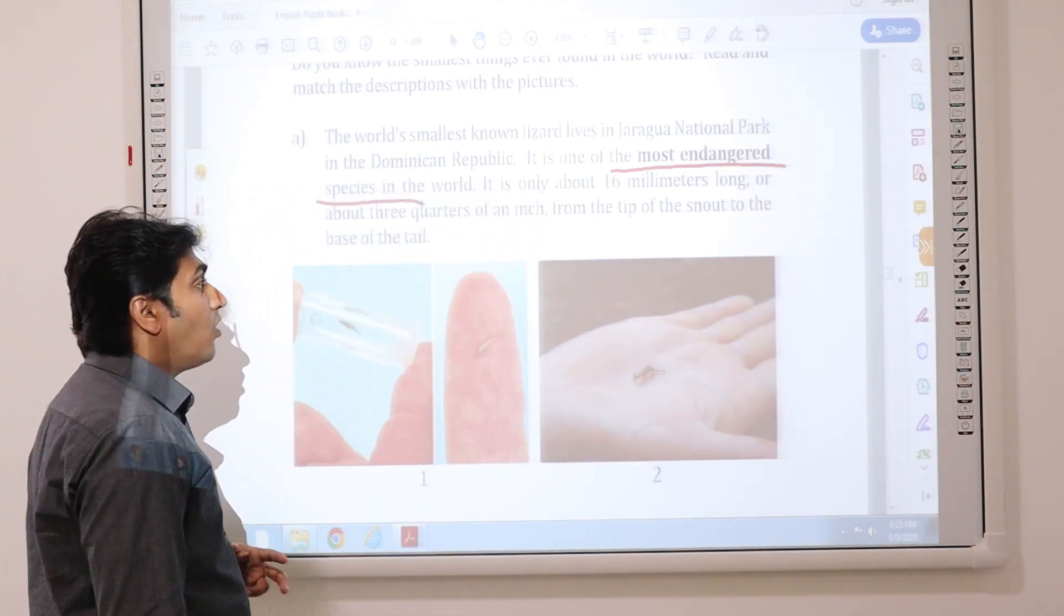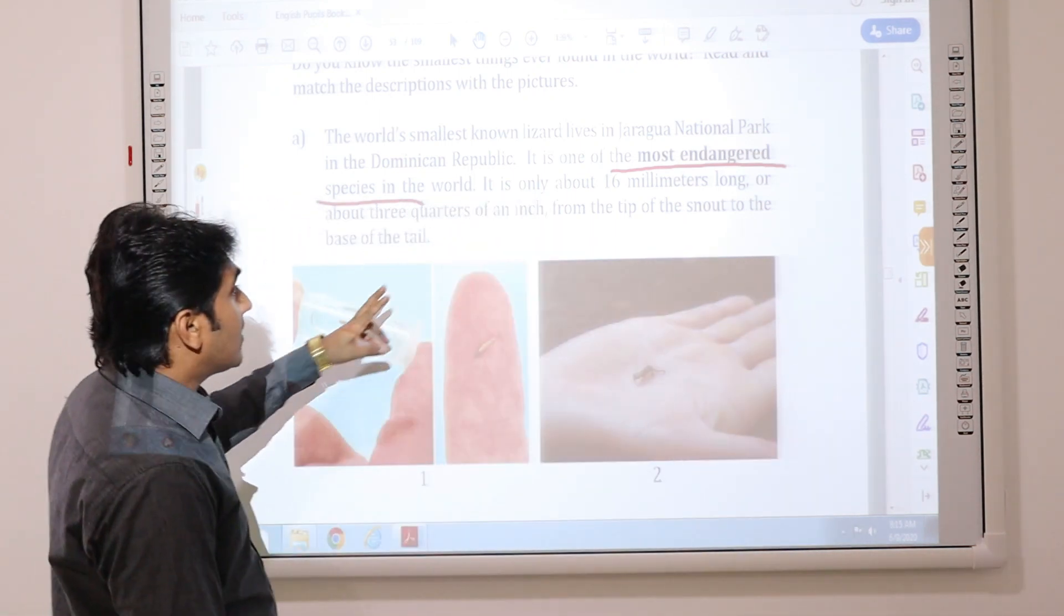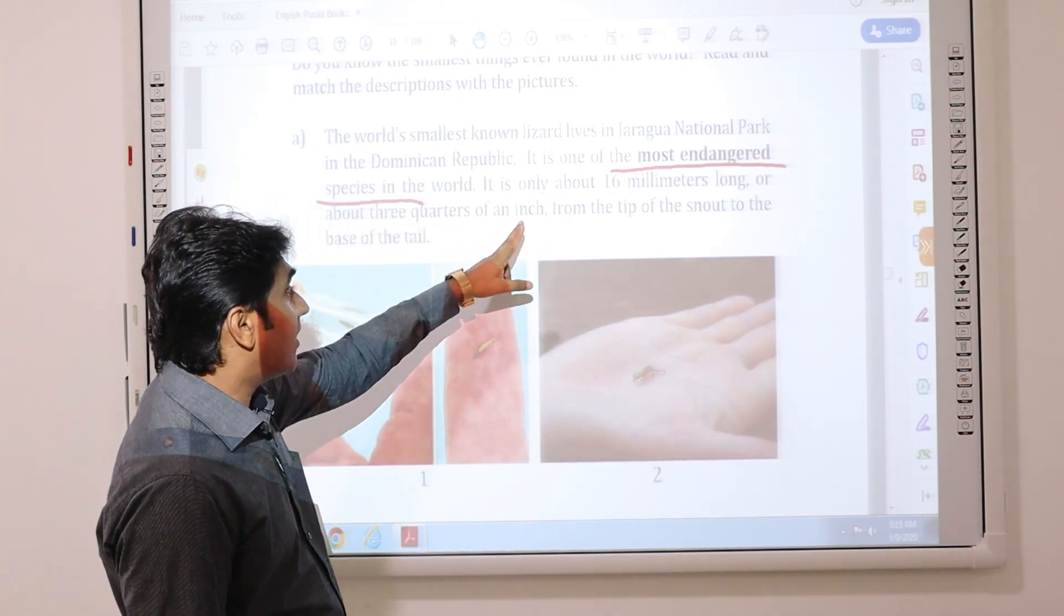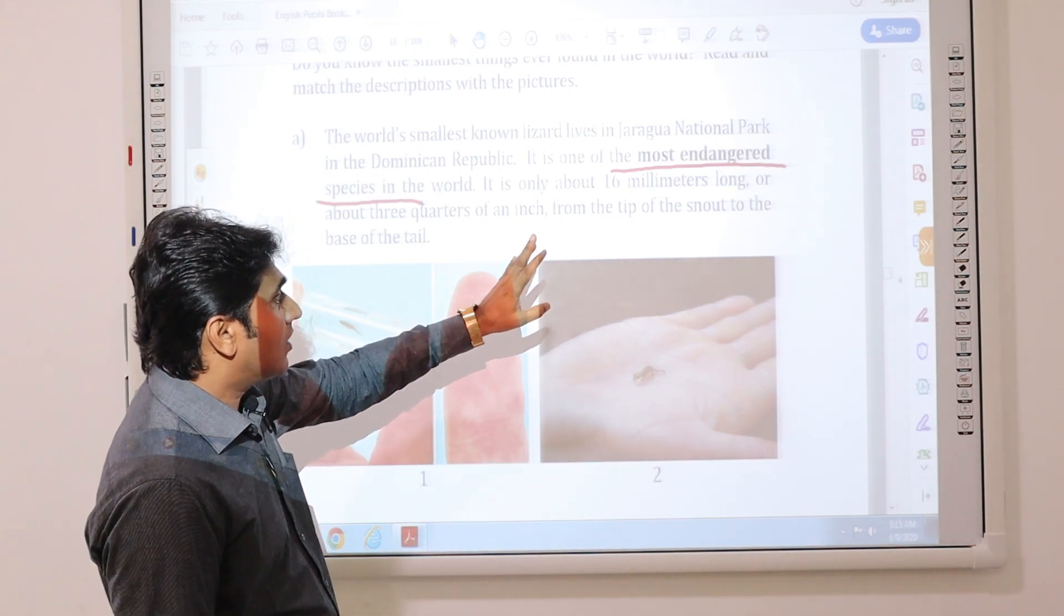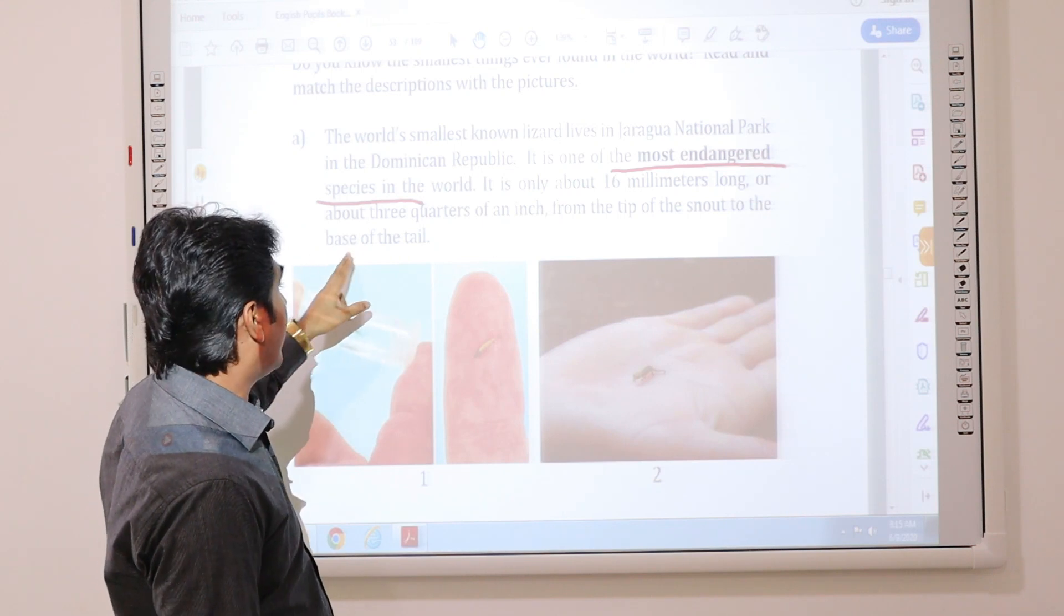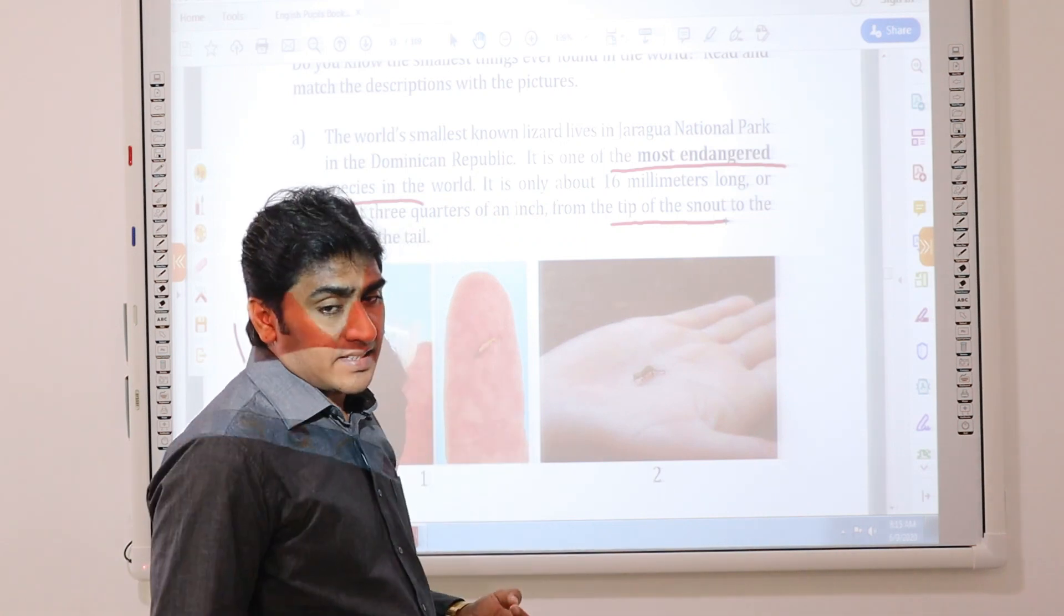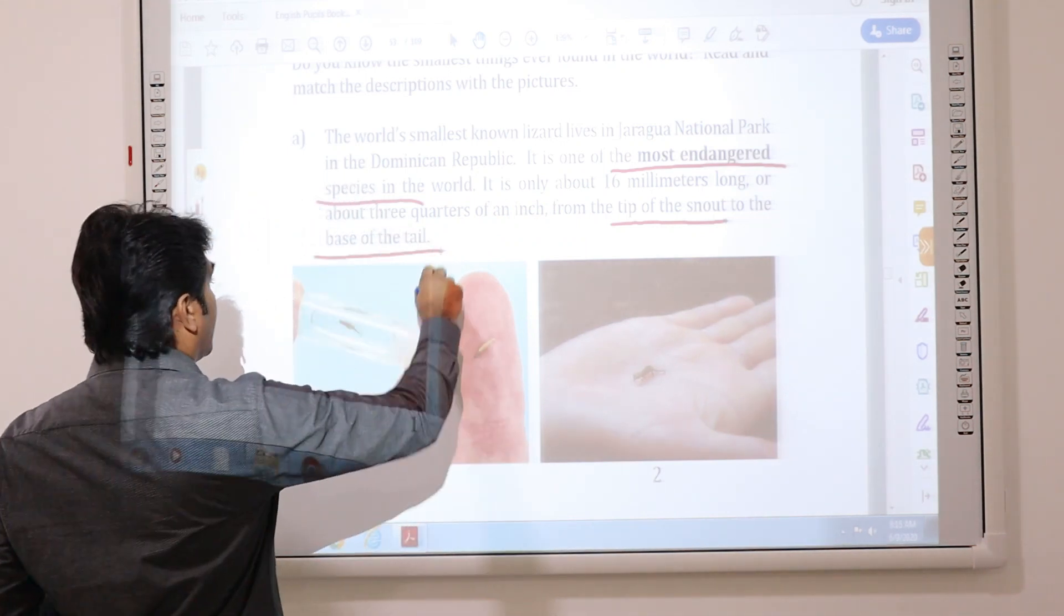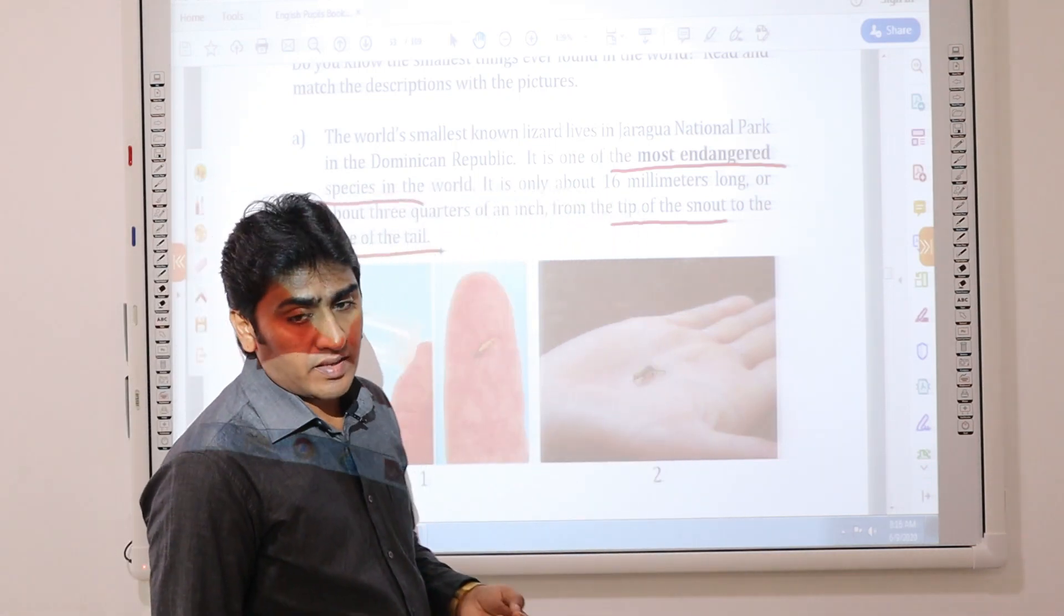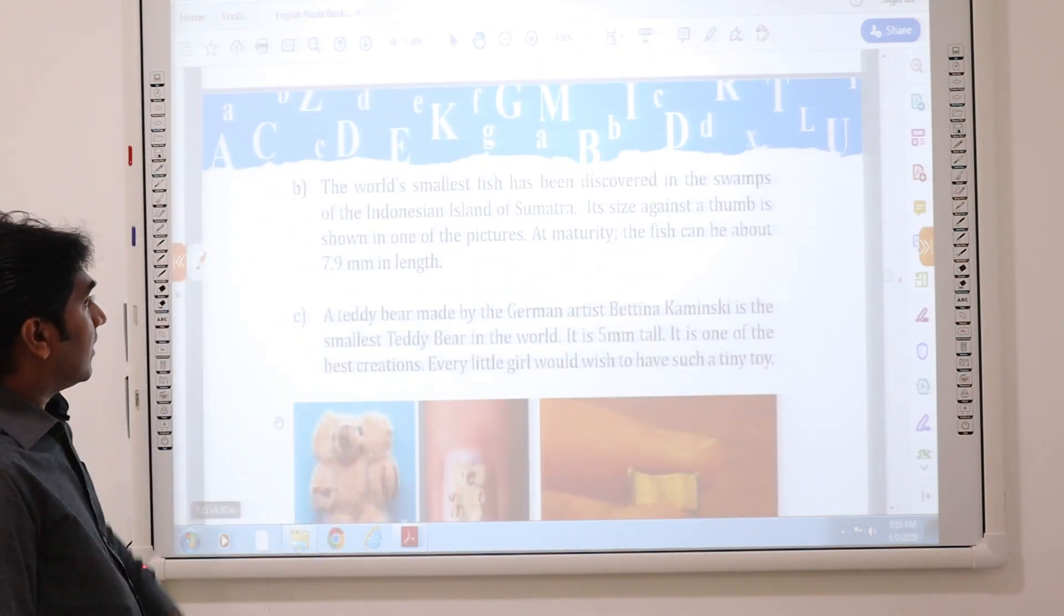It is only about 16 millimeters long. What about the length of this? About three quarters of an inch. Three quarters of an inch. From the tip of the snout to the base of the tail. From the tip of the snout, the nose, to the base of the tail. You understand that?